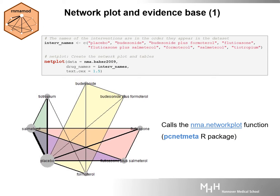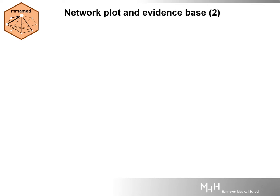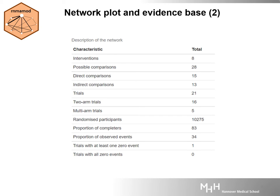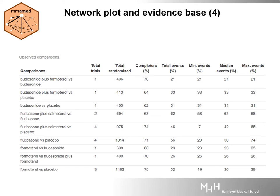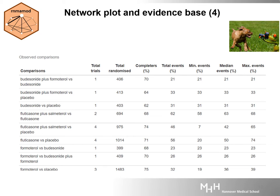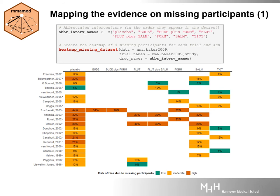To create a network plot, use the netplot function. The function currently calls the NMA network plot function from the PCNMeta R package. The netplot function gives further insights into the network evidence by printing three tables on the console: a table describing the network evidence, a table summarizing the trials, randomized sample and outcome for each intervention, and likewise for each observed comparison in the network. The Baker dataset has many missing participants in most trials, interventions and comparisons.